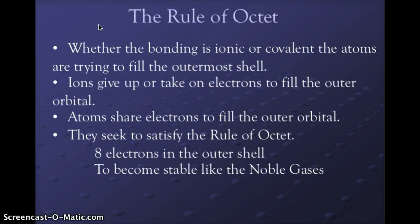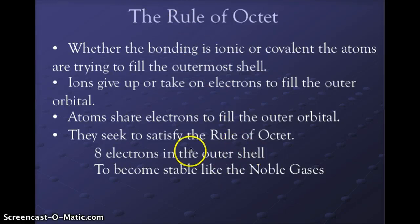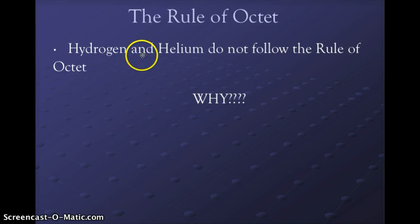As a reminder, we are trying to fulfill the rule of octet. Whether bonding is ionic or covalent, atoms are trying to fill their outermost shell. Ions give up or take on electrons to fill that outer shell. Atoms share electrons to fill the outer orbital, seeking eight electrons in that outer shell to become stable like the noble gases. Hydrogen and helium do not follow the rule of octet because they only have a 1s orbital — they are only looking for two electrons to stabilize that single orbit.